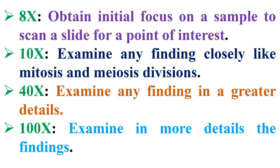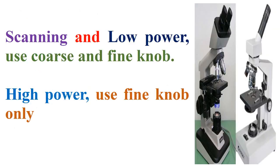Therefore, 8x is used to obtain initial focus on a sample and to scan a slide for a point of interest. Meanwhile, 10x is used to examine any finding closely, like mitosis and meiosis divisions. Whereas 40x is used to examine any finding in greater detail. In addition, 100x is used to examine findings in more detail. For scanning and low power, use coarse and fine knobs; for high power, use only the fine knob.